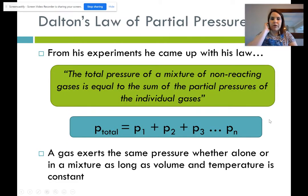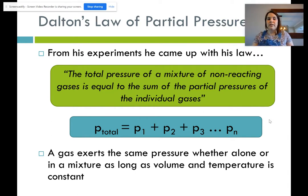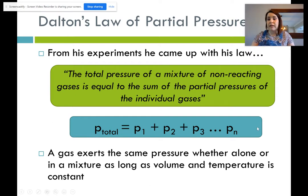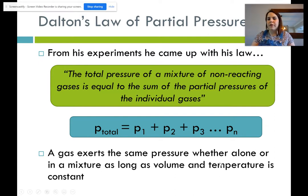From this we get Dalton's Law of Partial Pressures: the total pressure of a mixture of non-reacting gases equals the sum of the partial pressures of the individual gases. A gas exerts the same pressure whether alone or in a mixture, as long as volume and temperature are constant — because volume and temperature can impact pressure, as we learned from the gas laws.